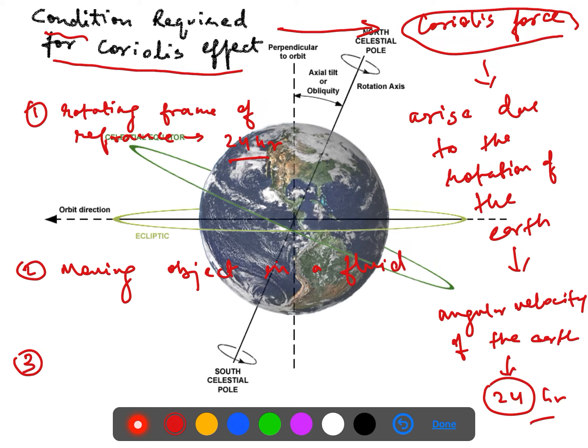It is observed by an observer on the moving frame of reference. So observer position, observer should be on the earth. That means all the three conditions have to be fulfilled. First it is a rotating frame of reference, that means earth itself is rotating.